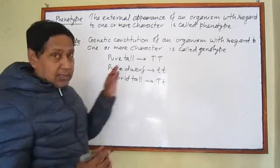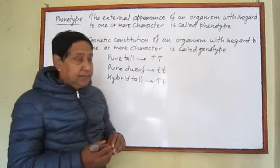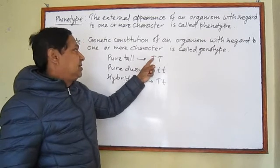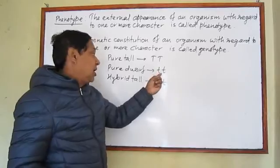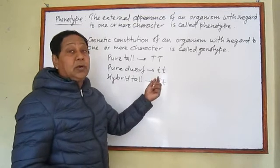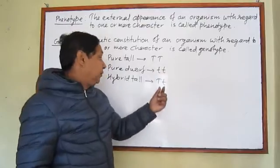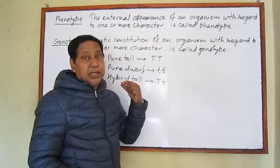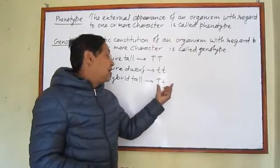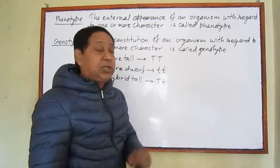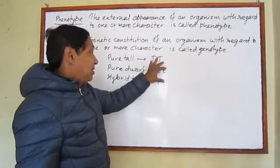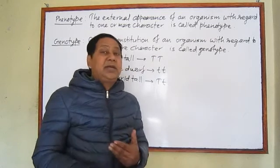Now let's verify this set of genes with phenotype and genotype. A pea plant with capital T capital T appears tall — phenotypically tall, and its genotype is also tall. A plant represented by small t small t is phenotypically dwarf; its external appearance is dwarf and both genes carry the same character of dwarfness. But a pea plant with capital T small t appears tall phenotypically, though its genes carry both characters of tallness and dwarfness. Dwarfness can appear in its offspring.